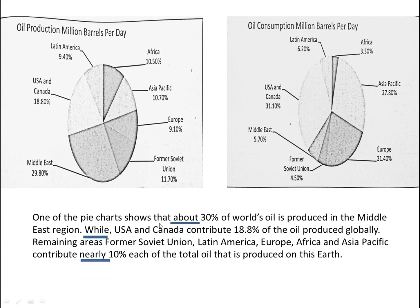Let's look at the key words used here. I have used 'about' and 'nearly' rather than writing the exact number 29.80. I have also used the linker 'while.' To avoid repeating the same approximation word again and again, we can use 'about,' then 'nearly,' then 'approximately' as synonyms. It is important that you know all the synonyms to use and that you don't repeat one word again and again in the same paragraph or different paragraphs.